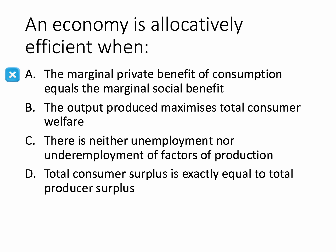Let's take option A: the marginal private benefit of consumption equals the marginal social benefit. That answer ignores the production side — the cost side of supply. The production of goods and services is not just about consumption. Option B looks promising: the output which maximizes total welfare — and that is indeed the right answer.